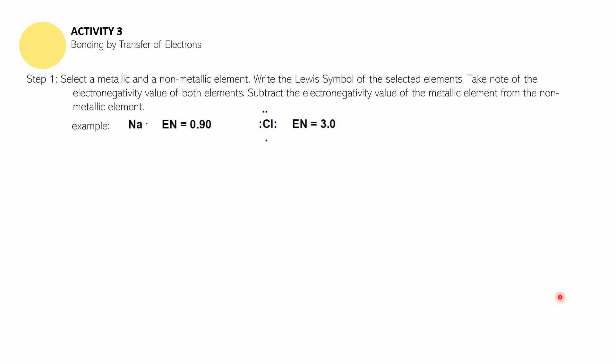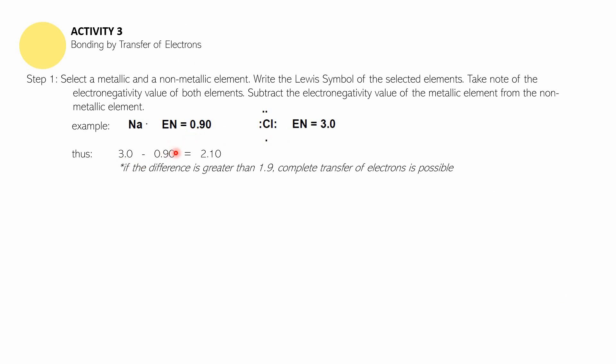For example, sodium has an electronegativity value of 0.9 and chlorine has an electronegativity value of 3.0. You subtract the metal's value from the non-metal's value: 3.0 minus 0.9 gives 2.10. Now, if the difference is greater than 1.9 — such as in this case, 2.10 — a complete transfer of electrons is possible. Since there is a complete transfer of electrons, this is an ionic bond.